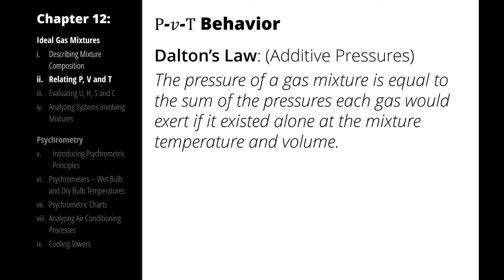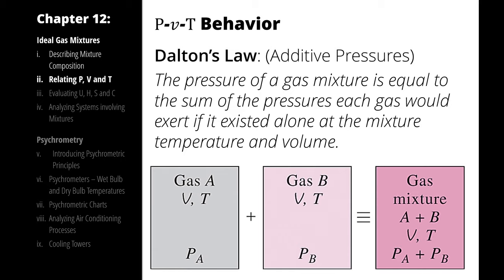When we talk about mixtures of gases, there are two ways that we can model the mixtures and their behavior. The first is called Dalton's law, which, like all models, is inaccurate but useful. Dalton's law treats each of the components or species of the mixture as though they occupy the entire volume, and each of them contributes part of the pressure — a partial pressure — to the entire pressure of the mixture.